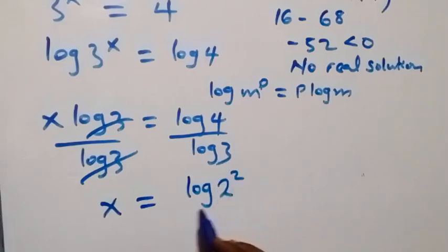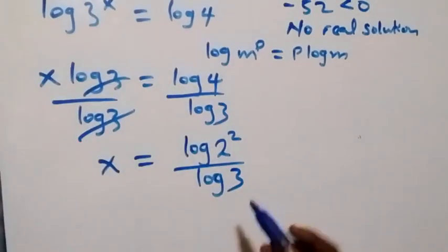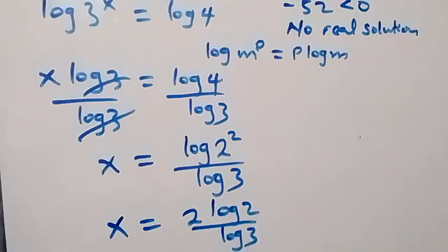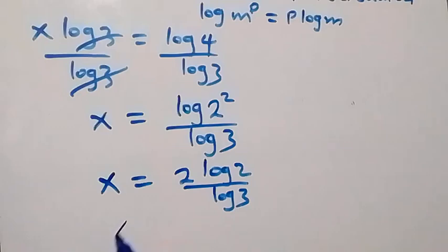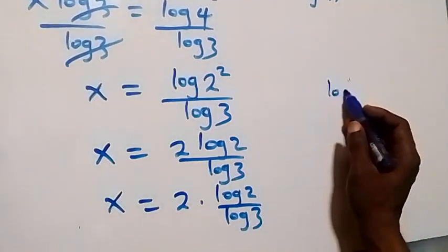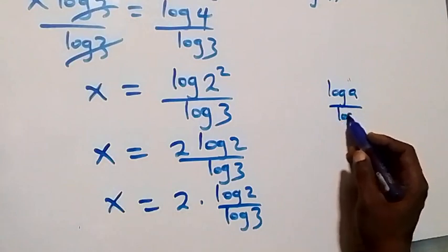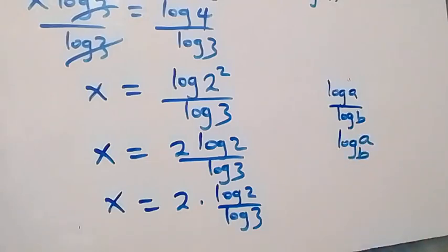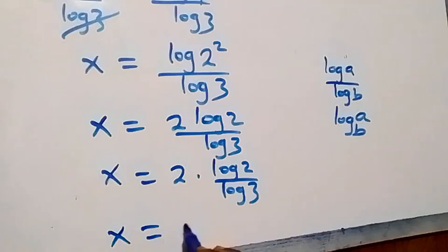Log 3 cancels, giving x = log 4 / log 3. Since 4 = 2², we can write this as x = log(2²) / log 3, and applying the power rule, x = 2·log 2 / log 3. Separating this, x = 2 × (log 2 / log 3). By the change of base rule — log a / log b = log_b(a) — we have x = 2 × log_3(2).